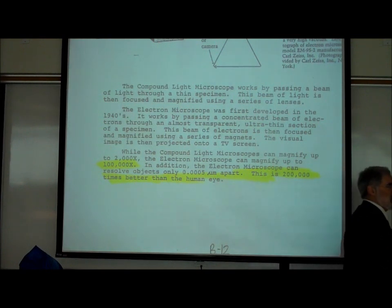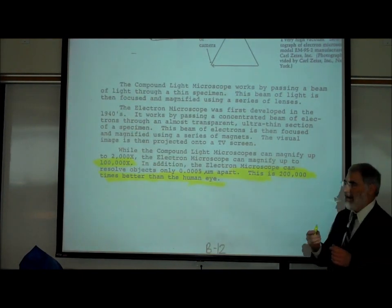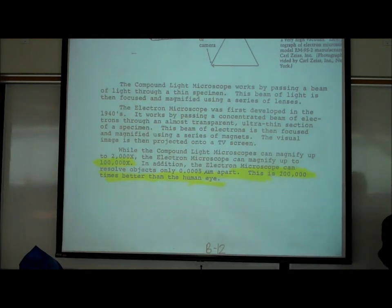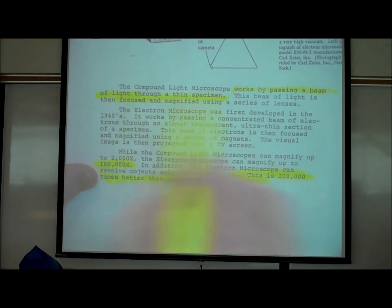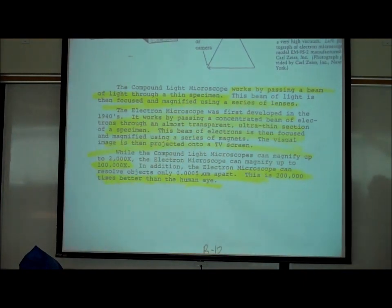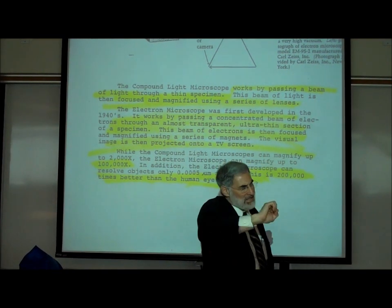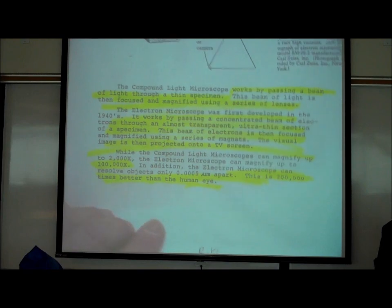The sharpness of an electron microscope is 200,000 times better than the human eye, giving incredible magnifying powers that allow us to see internal structures of a single cell. It's called an electron microscope because it uses a beam of electrons — not light — focused with magnets, whereas your light microscope focuses a beam of light with lenses.